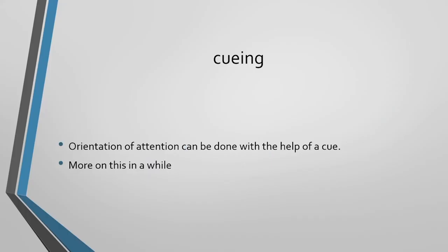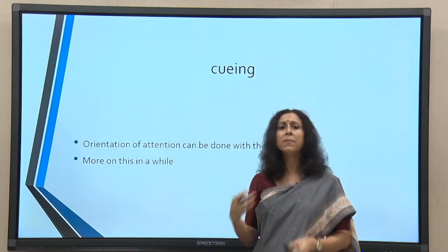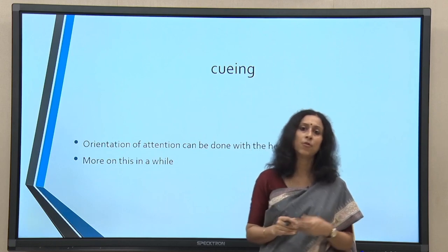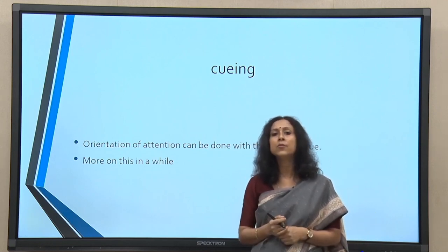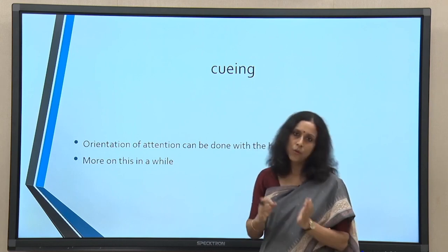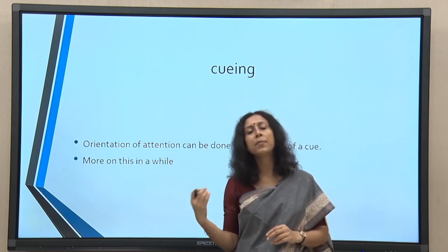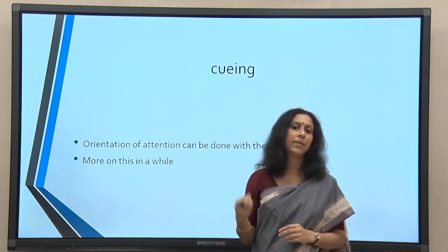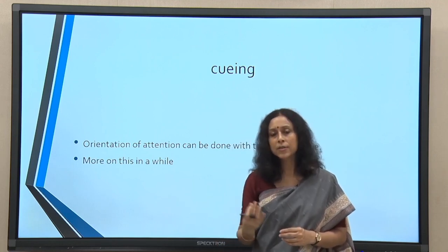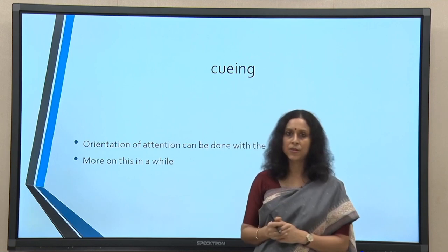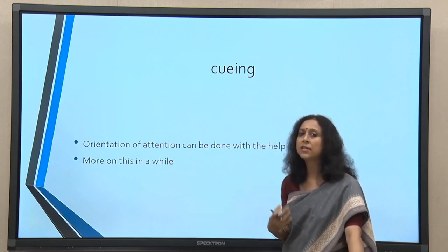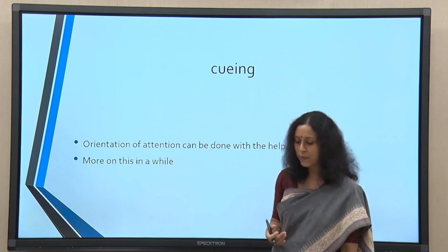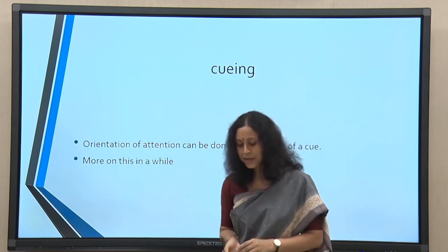Orienting is connected to what we call cueing. With the help of a cue we can orient attention — sometimes goal-directed, sometimes stimulus-driven. When it is stimulus-driven, we use a cue to orient attention. A cue can be a sound, a light, or anything that attracts our attention. Posner looked at cueing and its role in orienting attention in covert attention in detail. Selective attention is yet another domain of research within attention — a very important notion.